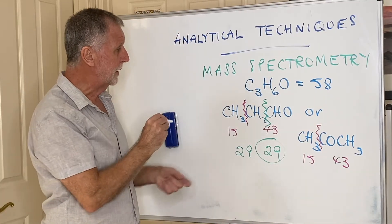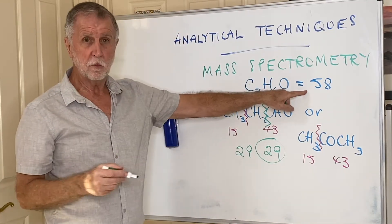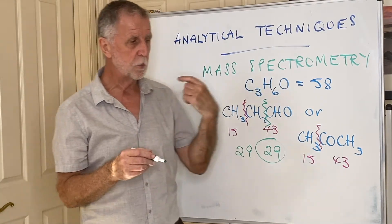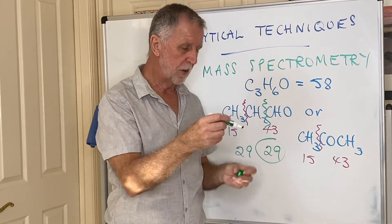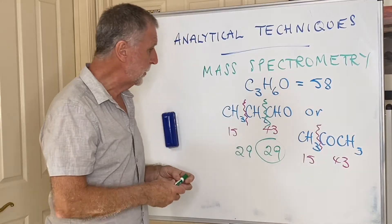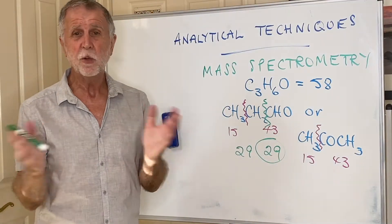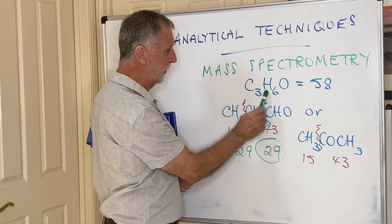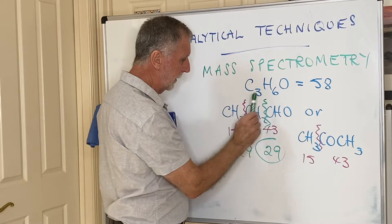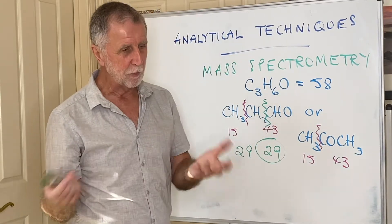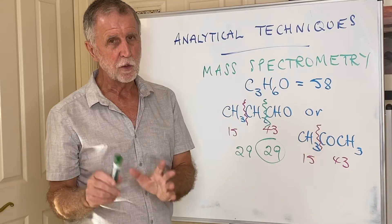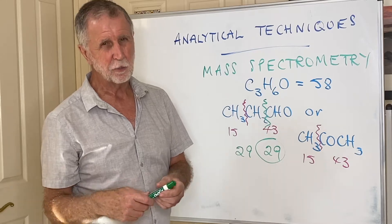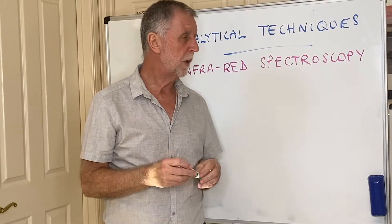There are worked examples in the revision book to practice these, and they're really quite straightforward — it's just a little bit of maths. Be careful when adding up: carbon is 12, hydrogen is 1, oxygen is 16. Just make sure you add up correctly, because mistakes there will make it seem like the technique isn't working when it actually is.